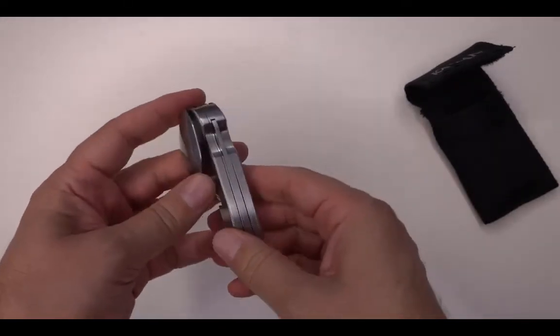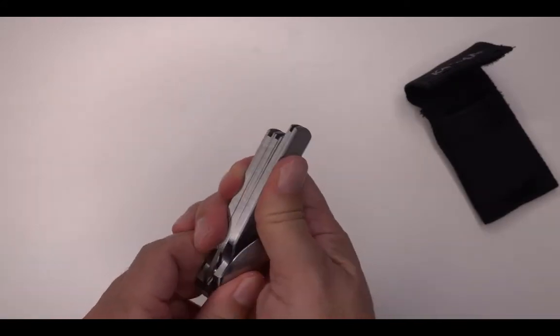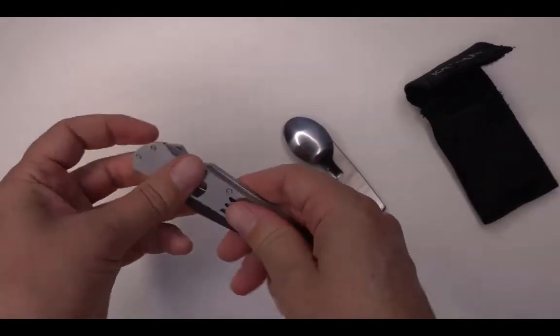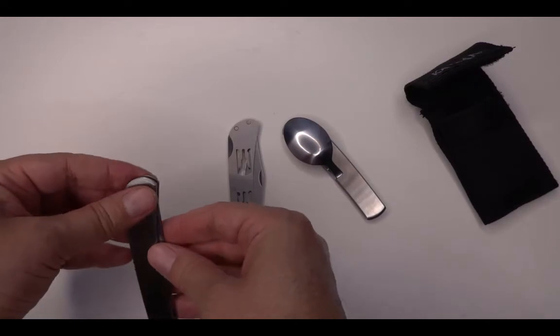And the thing that I like about this one is that you can take them apart. Like this. The spoon. The knife and the fork.